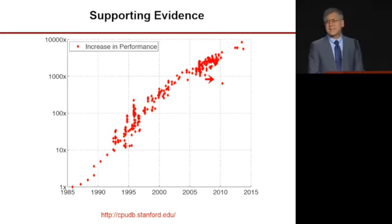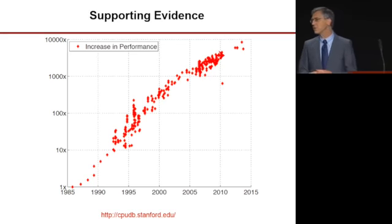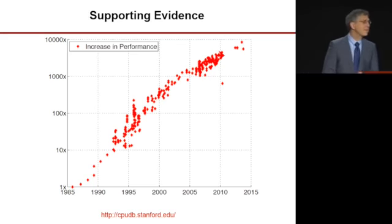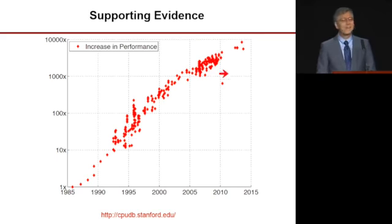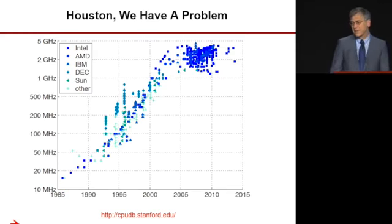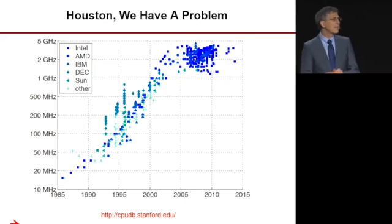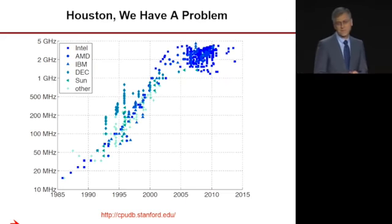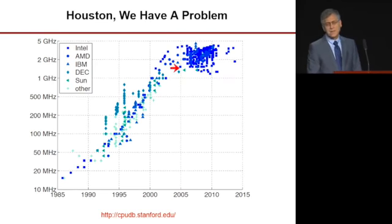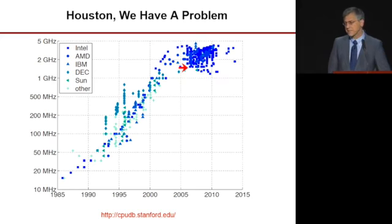This might lead you to believe that computing scaling will happen in perpetuity, but in fact the ducks are paddling really hard. Another plot of the microprocessor data shows what the clock frequency is over time, and there was a dramatic change around 2005 where clock frequency of microprocessors stopped scaling.